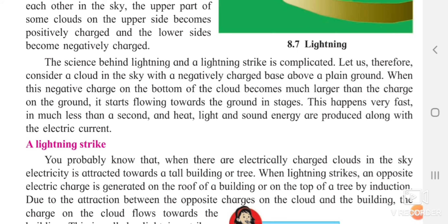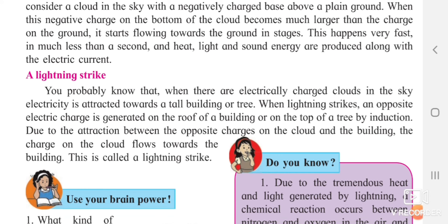Lightning happens very fast — in much less than a second — and produces heat, light, sound energy, and electric current. When lightning strikes, the electricity is attracted toward buildings or trees. Due to attraction between opposite charges — the building carries positive charge and the cloud carries negative charge — lightning gets attracted toward trees and buildings, causing serious danger to people.